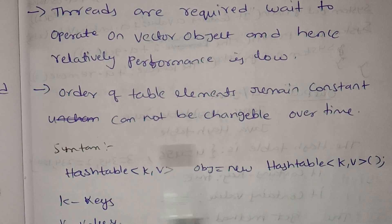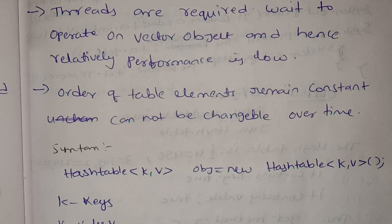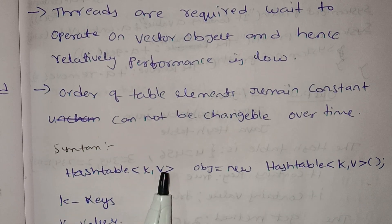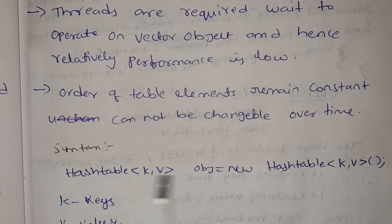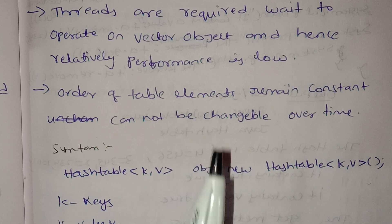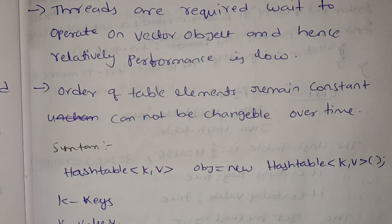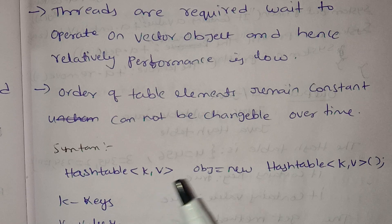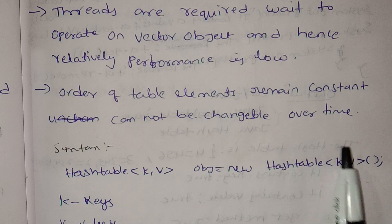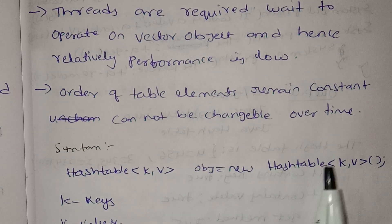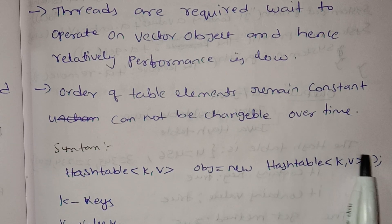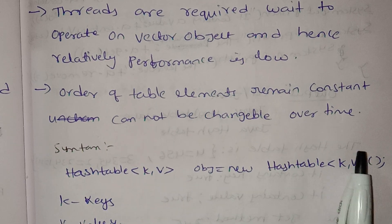This is the syntax. When we create the object, the hash table takes keys and values as type parameters. If we use the new operator, memory will be allocated. This is the constructor. The function acts as the constructor.